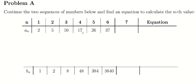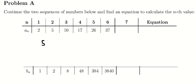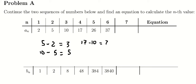For the first one, if we look carefully, if we put number 5 minus number 2, we got number 3. Number 10 minus number 5, we got number 5. 17 minus number 10, you got number 7, and so on.